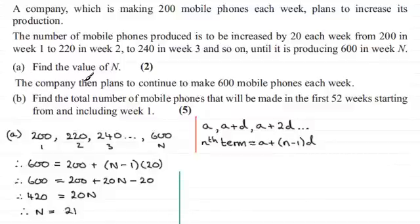It says the company then plans to continue to make 600 mobile phones each week, and we've got to find the total number of mobile phones that will be made in the first 52 weeks starting from and including week 1.